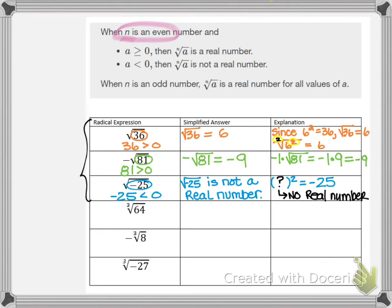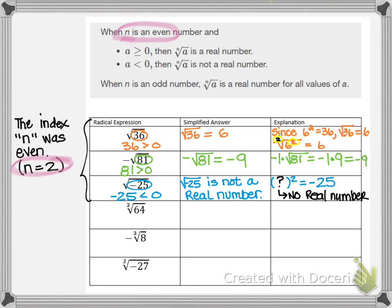Let's summarize what we just did. In all three of the first examples we had an index that was an even number — specifically n equals 2, the square root. With an even index, when our radicand was negative 25 we had a negative radicand, and since the index was even we did not have an answer in the real number system. That's why we had to say not a real number.